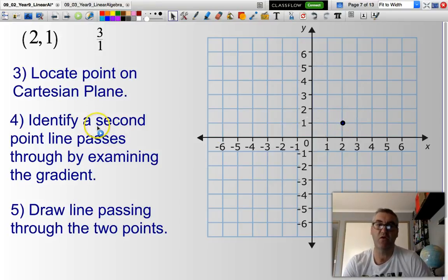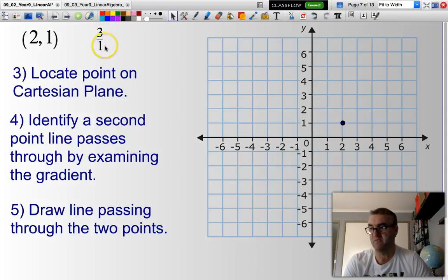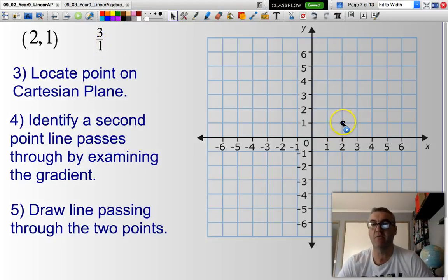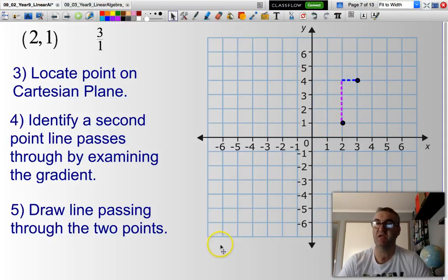Now, to draw a straight line, I effectively just need another point. Then I can draw a line that goes straight through those two points. So I need to examine the gradient because the gradient represents how many units I go up divided by how many units I go across. So 3 over 1 is a positive gradient, so I'll be going up. So starting here, I will go up 3 units: 1, 2, 3, then I go across 1 unit and this here will give me my second point.